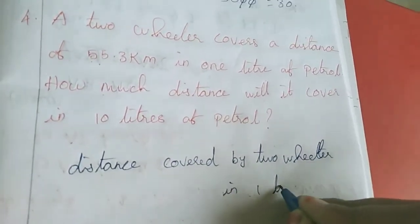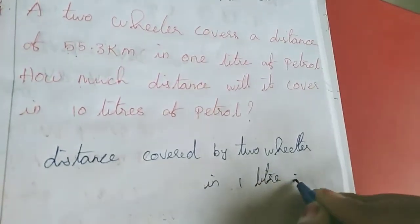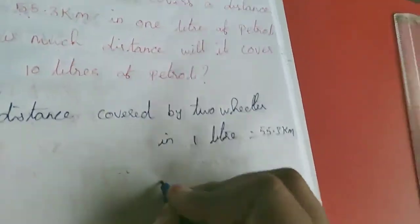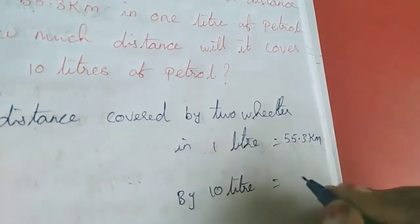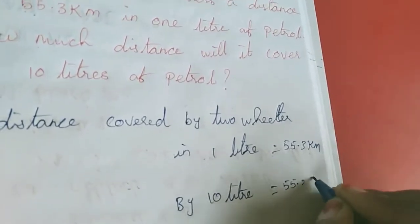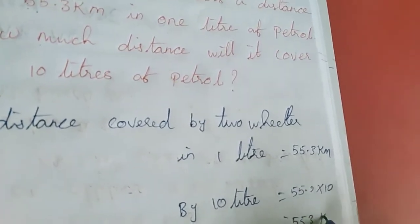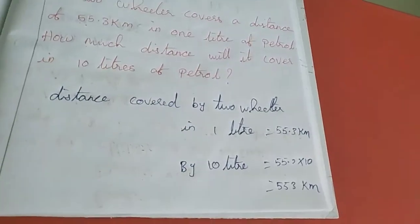In 1 liter equal to 55.3 km, by 10 liters I call it 55.3 into 10, so this is the 1 digit, answer is 553 km. Now I am going to move to the 5th sum.